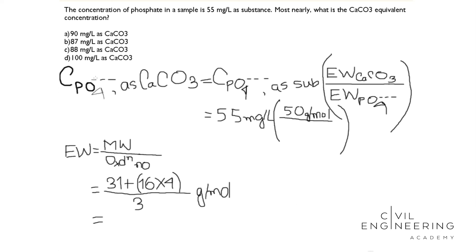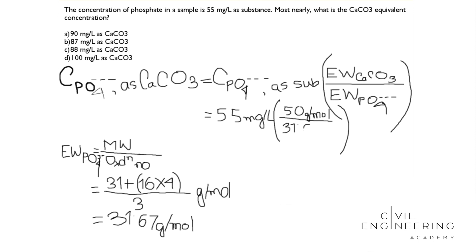The oxidation number for phosphorus is 3. So the equivalent weight of phosphate ion equals (31 + 16×4) divided by 3. After calculation, I got the equivalent weight of phosphate ion: 31.67 grams per mole.